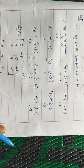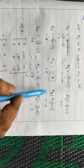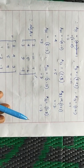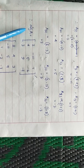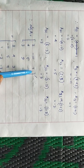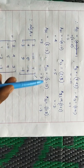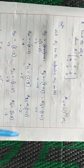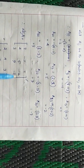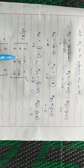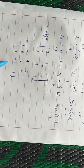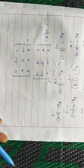Similarly, find the cofactors of the second row and third row elements. After finding all cofactors, assemble the adjoint of A: replace the first row of the original determinant by its corresponding cofactors, replace the second row by its corresponding cofactors, replace the third row by its corresponding cofactors, and then take the transpose of this cofactor matrix. The result is the adjoint of A.